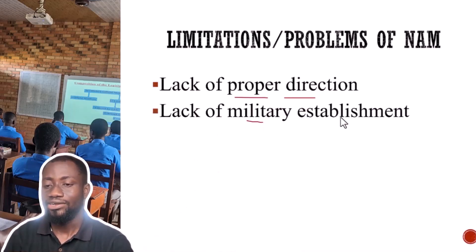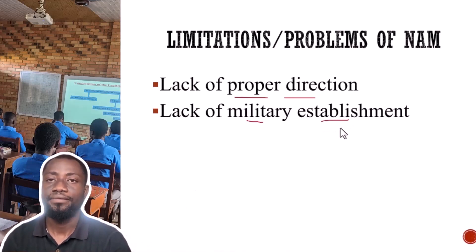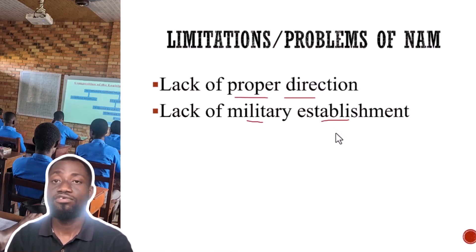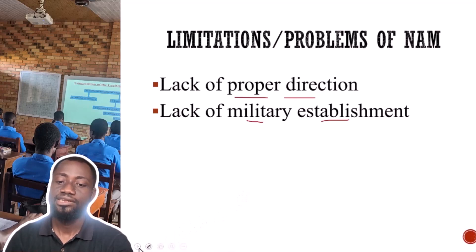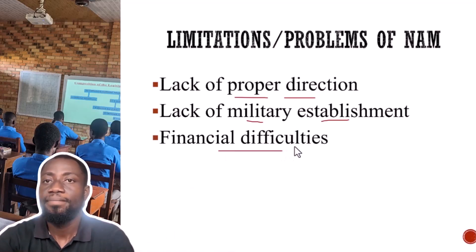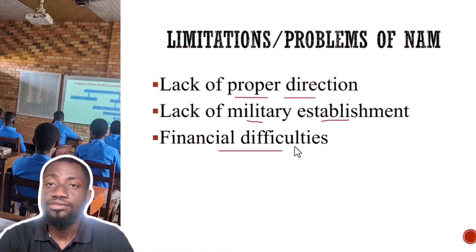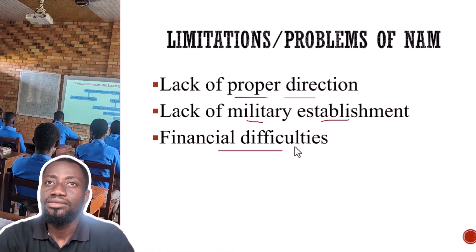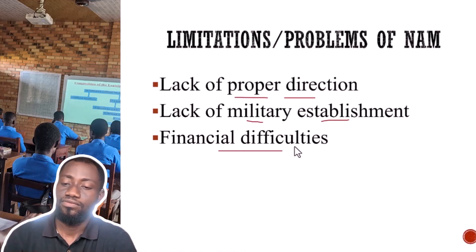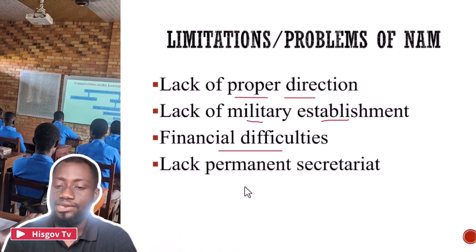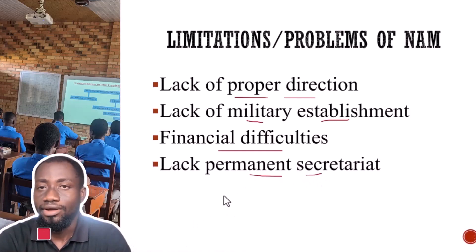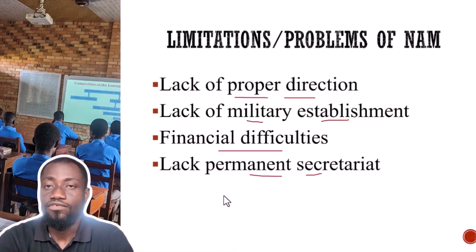Next, NAM lacks military establishment. NAM does not have a standing army, so they are unable to use military force to enforce their resolutions, agreements, and conventions. Financial difficulties are also a problem — they lack finances to implement resolutions and conventions they agree on, partly because some members don't pay dues. And finally, NAM lacks a permanent secretariat — they don't have an office from which to run the administration of the organization. That is a big blow to NAM.